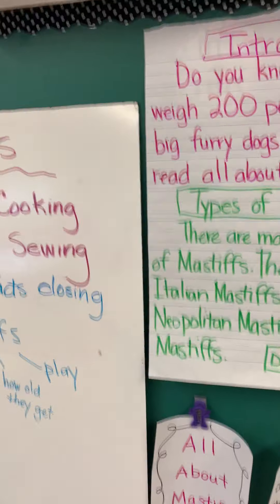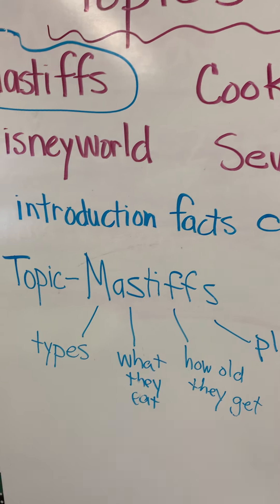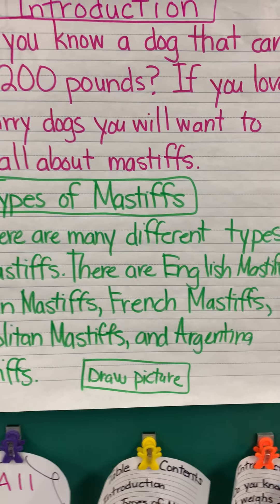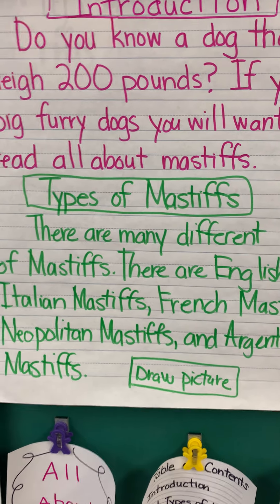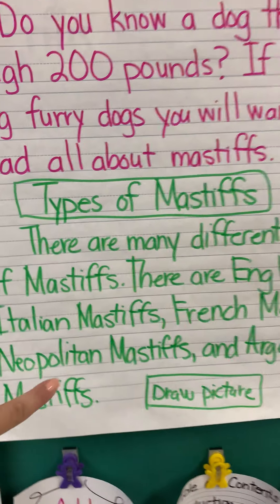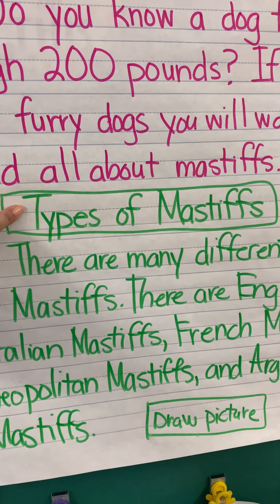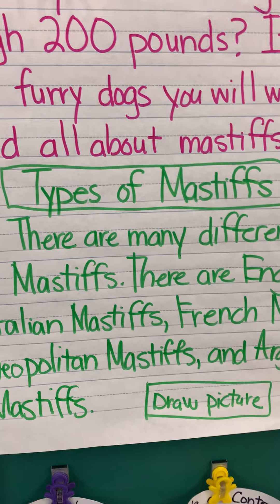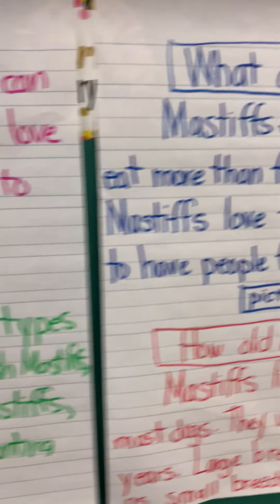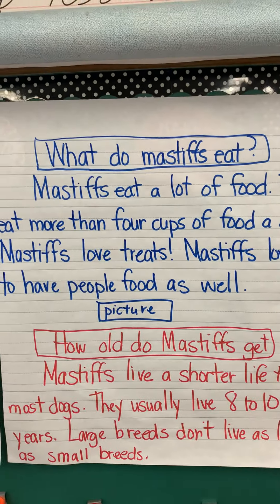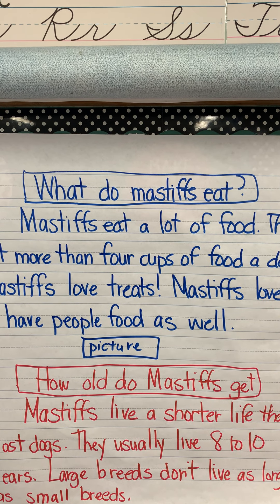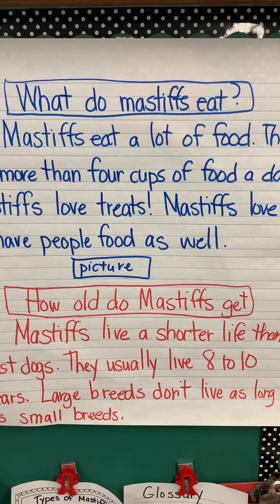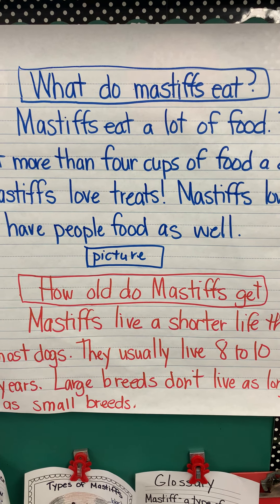I took each of my subtopics — types, what they eat, how old they get — and I'm going to make them a chapter in my book. So they are now a subtopic with a paragraph just about the type of mastiff with a picture. What do mastiffs eat? With a picture. How old do mastiffs get? With a picture.